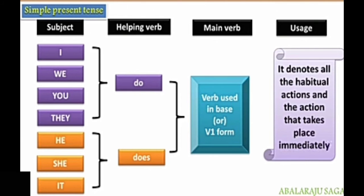Here we have the structure of the sentence. This flow chart will help you to understand. The pronouns — names of person, place, things — can be written as subject: I, we, you, they are first person and second person; and he, she, it are third person singular. Helping verb — there are two: do and does. Do is used for first person and second person, and does is used for third person singular form.